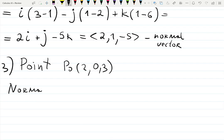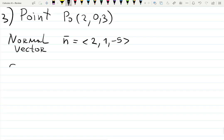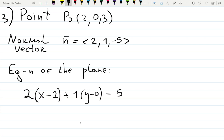Normal vector n is ⟨2, 1, -5⟩. Then the equation of the plane will be - so normal 2, 1, and -5 each multiplied - 2(x-2) + 1(y-0) + (-5)(z-3) = 0. So you can also simplify this. If you distribute it will be 2x + y - 5z.